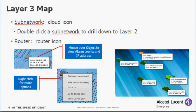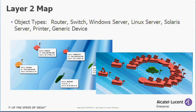The layer 3 map shows cloud icons representing subnetworks and the routers and other devices that are connected to those subnetworks. You can drill down to a layer 2 map showing various device types and how they're connected in layer 2.